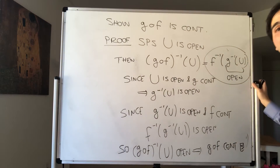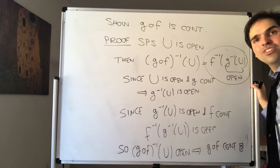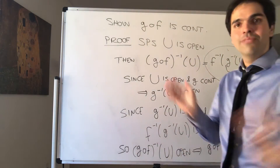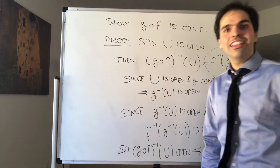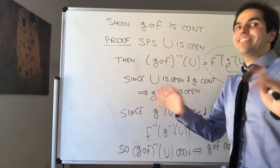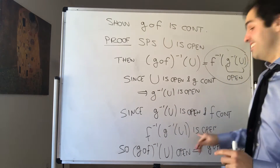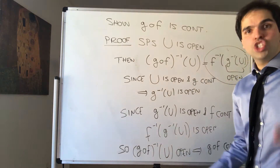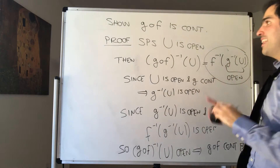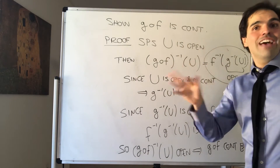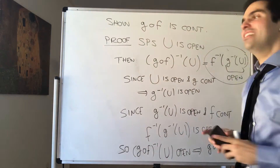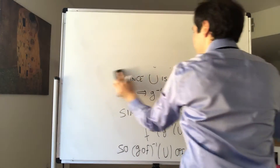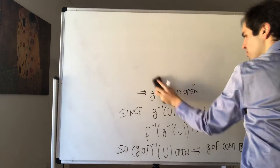How cool is that? If I tried to show this with the epsilon-delta definition of continuity, I have done that — it's messy. But this is way more elegant. Now, last but not least, let me show that the two definitions coincide for metric spaces — that f is continuous if and only if f inverse of u is open for every open u.